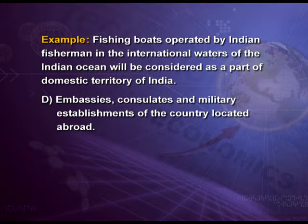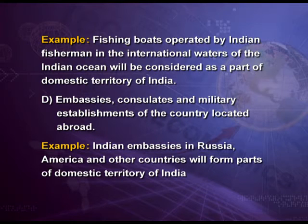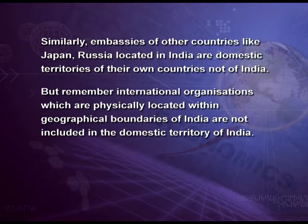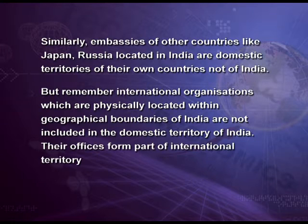The fourth item included in domestic territory is embassies, consulates, and military establishments of the country located abroad. For example, Indian embassies in Russia, America, and other countries form part of the domestic territory of India. Similarly, embassies of other countries like Japan and Russia located in India are domestic territories of their own countries, not of India. But remember, international organizations physically located within India are not included in the domestic territory of India; their offices form part of international territory.